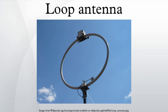Small loops have poor efficiency and are mainly used as receiving antennas at low frequencies. Except for car radios, almost every AM broadcast receiver sold has such an antenna built inside it or directly attached to it. These antennas are also used for radio direction finding. In amateur radio, loop antennas are often used for low-profile operating where larger antennas would be inconvenient, unsightly, or banned.